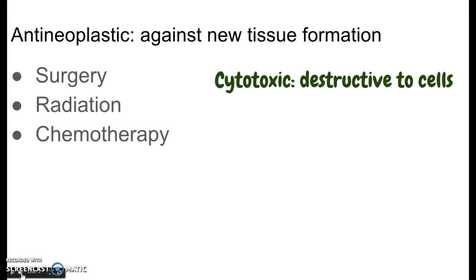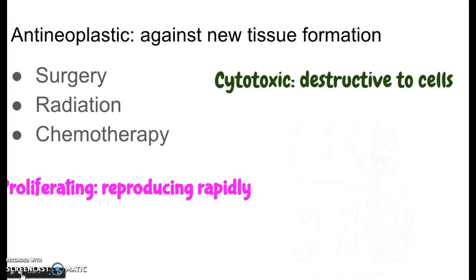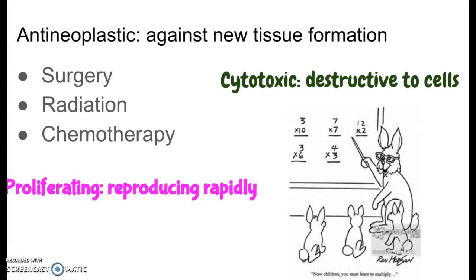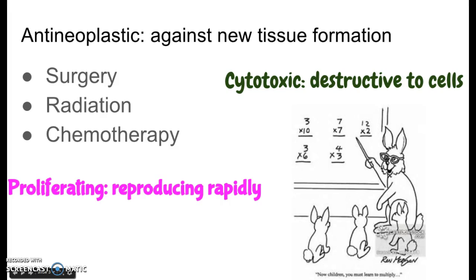Chemotherapy and radiation are both considered cytotoxic — cyto means cell, toxic means destructive, so cytotoxic means destructive to cells. Rapidly reproducing cells are called proliferating. Chemotherapy and radiation are both designed to only be cytotoxic to rapidly proliferating cells.